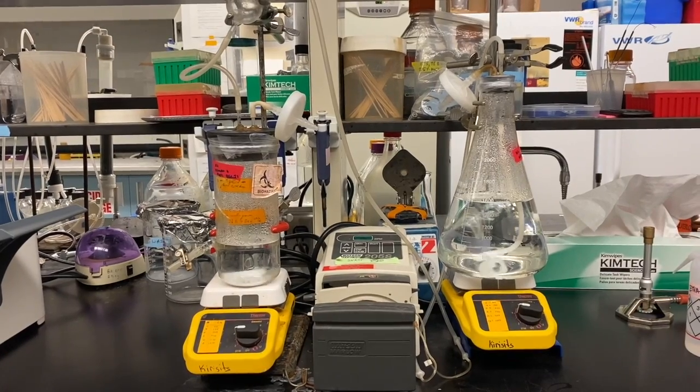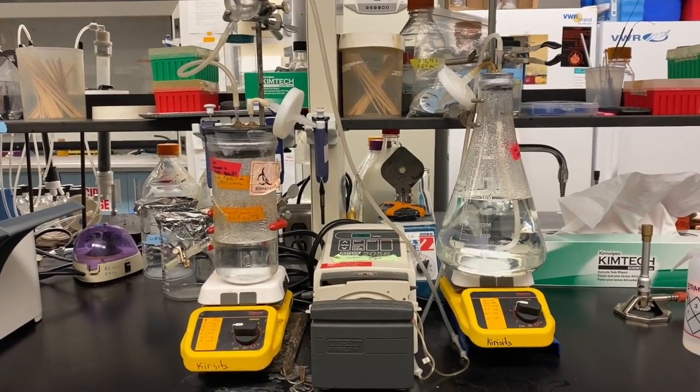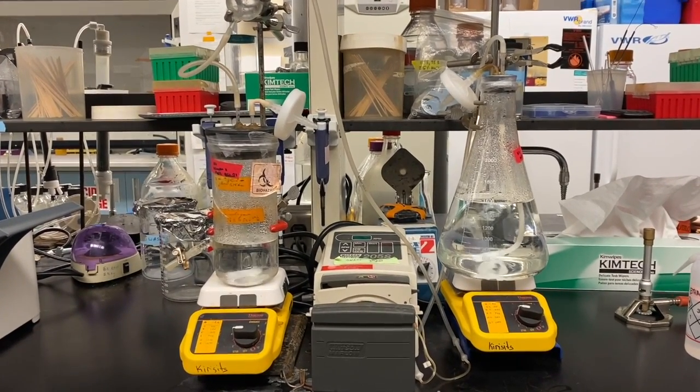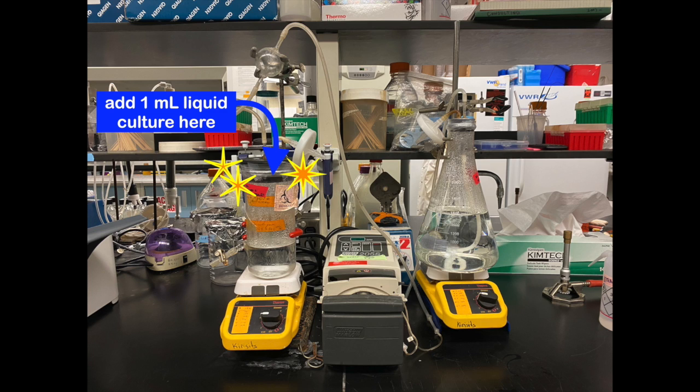After the chemostat has ran for 24 hours with media only, the growth chamber is inoculated with 1ml of the liquid culture sample we had just prepared. When adding the bacteria sample to your growth chamber, always use aseptic technique and flame the lid of the growth chamber. Remember to re-parafilm the lid of the growth chamber.